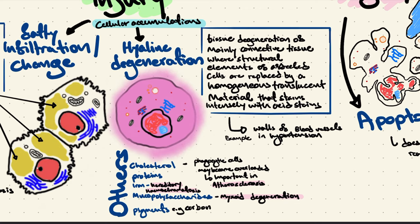There are several other forms of cellular accumulations worth mentioning. We can have accumulation of cholesterol, which becomes obvious in phagocytic cells undergoing atherosclerosis. Several types of proteins may accumulate. We might have accumulation of iron in hereditary hemochromatosis, accumulation of mucopolysaccharides in myxoid degeneration, and accumulation of pigments like carbon in alveolar macrophages. The point is that several different types of substances can accumulate within different types of cells in different conditions.